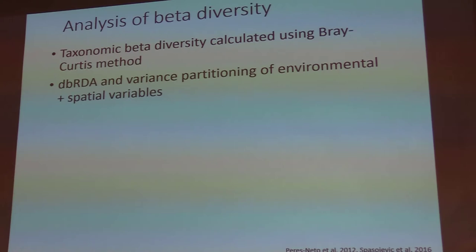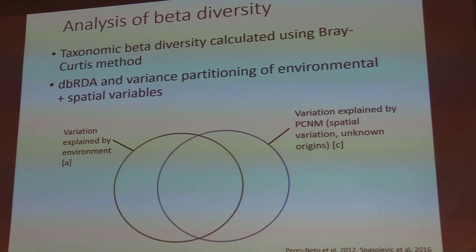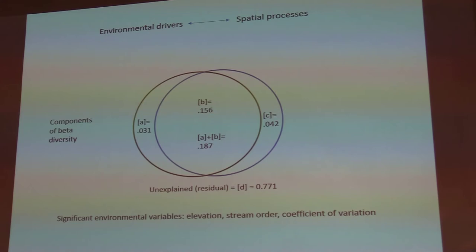The results are presented as a Venn diagram. The green circle represents the proportion of variation explained by environment, the blue represents pure space, and the intersection represents spatially structured environmental variables. Pure environment explains about 3%, pure space about 4%, and spatially structured environmental variables explain about 15%.